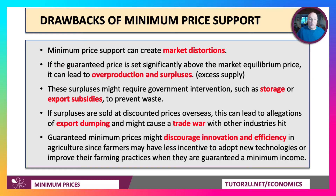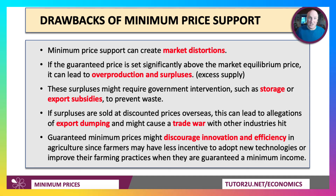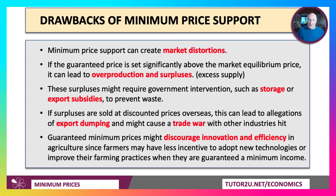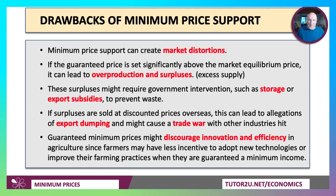What are the drawbacks of minimum price support? Setting a minimum price can cause distortions by moving away from the free market mechanism. If the guaranteed price is set well above the equilibrium, that can lead to overproduction and a system of semi-permanent surpluses, requiring intervention through purchasing, storage, and perhaps export subsidies to prevent waste. If surpluses are sold at discounted prices overseas, that can lead to allegations of export dumping and potentially a trade war. Furthermore, guaranteeing producers a minimum price could disrupt and discourage innovation and efficiency — if they're guaranteed a minimum income, they may have less incentive to adopt new technologies or improve farm practices.